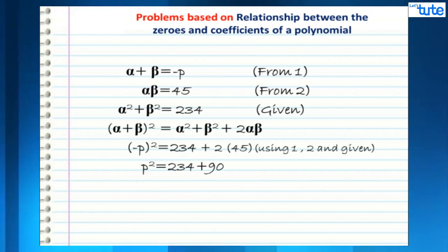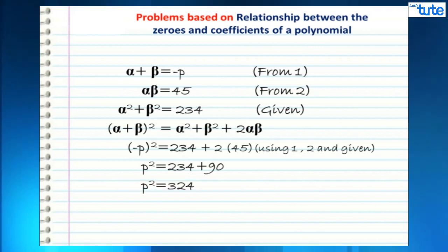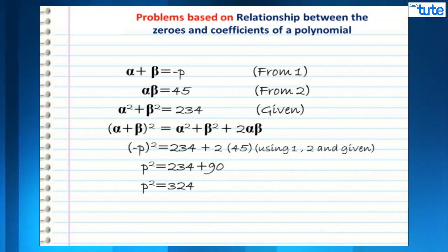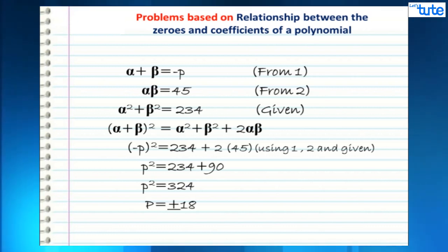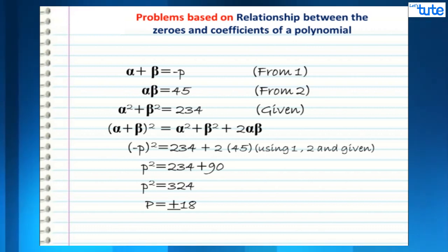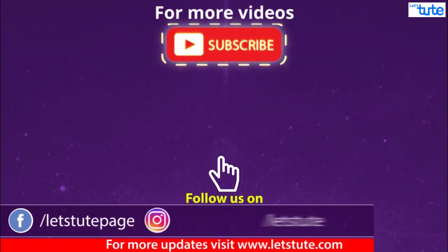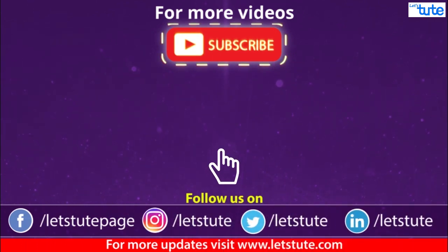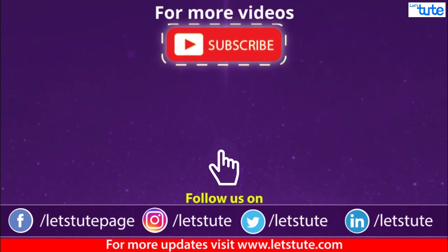So p² equals 234 plus 90, which gives p² equals 324. Since 324 is the square of 18, p equals plus or minus 18. The value of p is plus 18 or minus 18. For more problems based on polynomials, visit www.pledgestude.com.